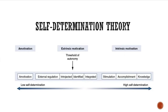The highest self-determined point on the continuum is knowledge. This is when you simply do something because you want to learn and try something new. That is the highest, most self-determined level of motivation.